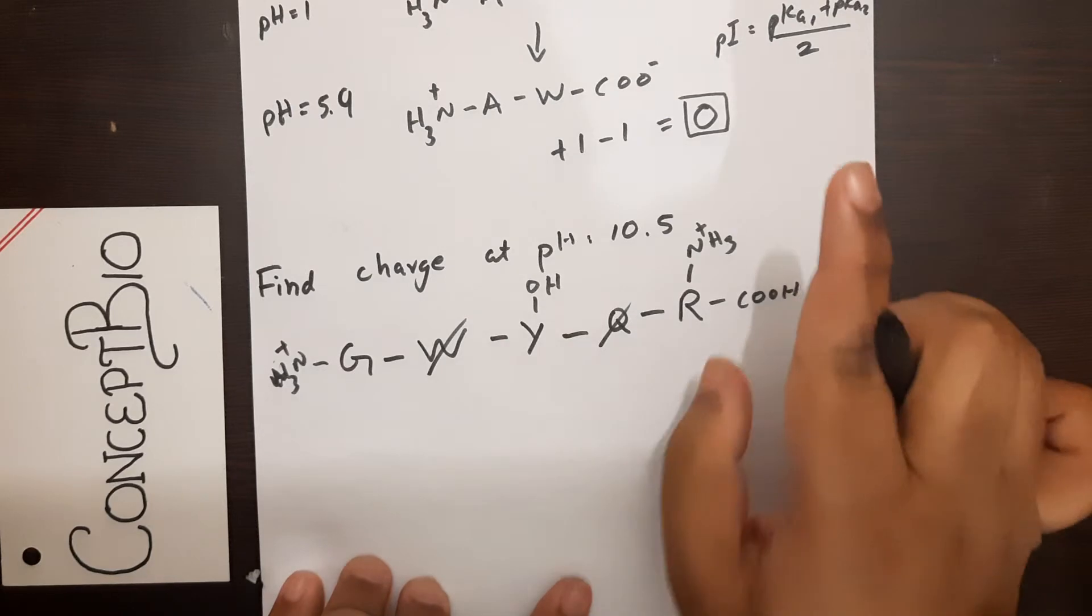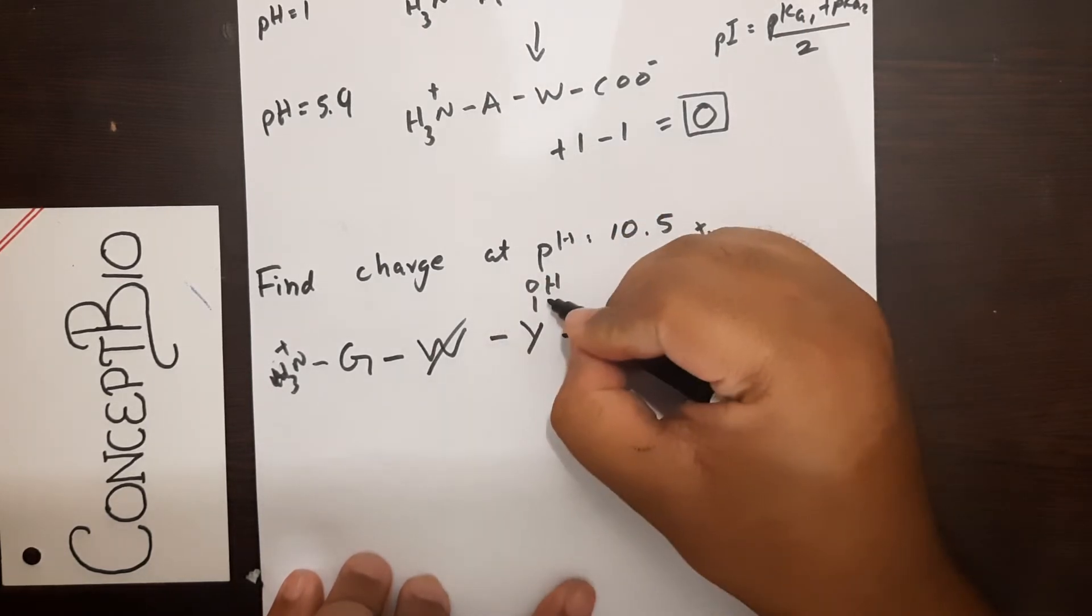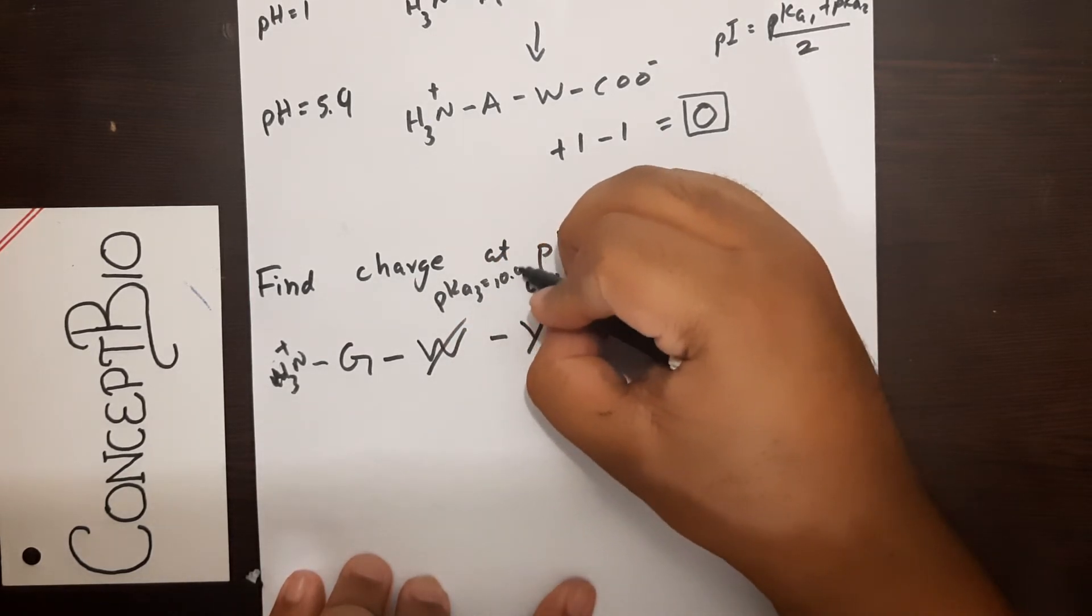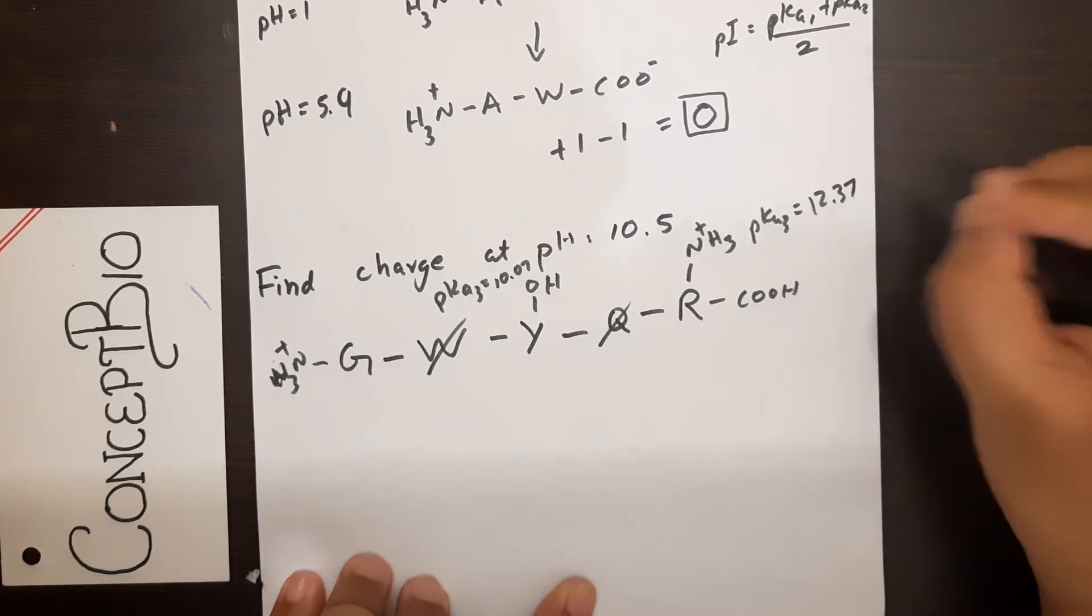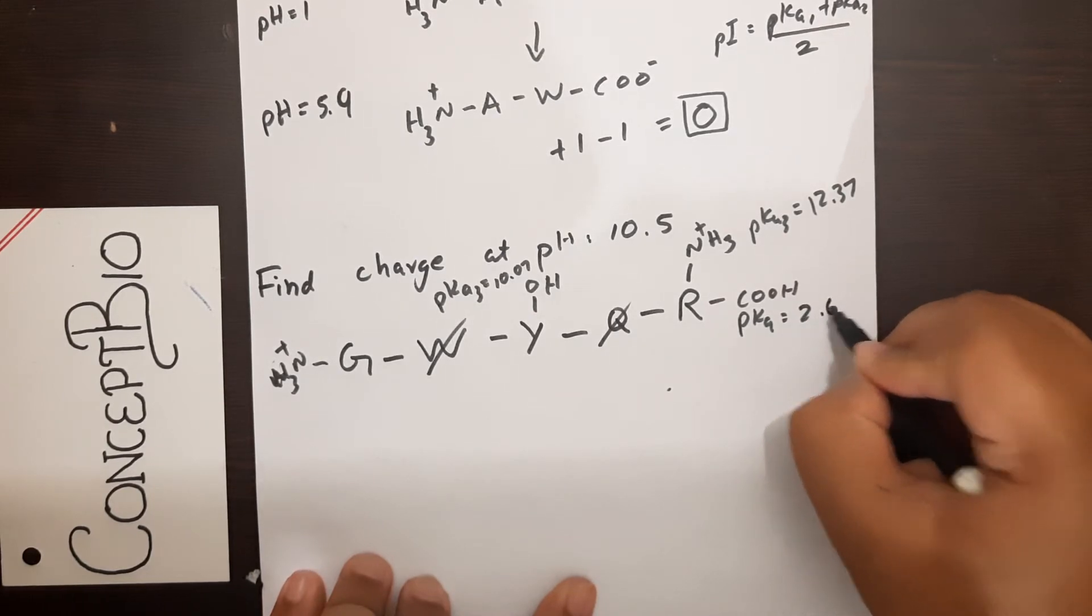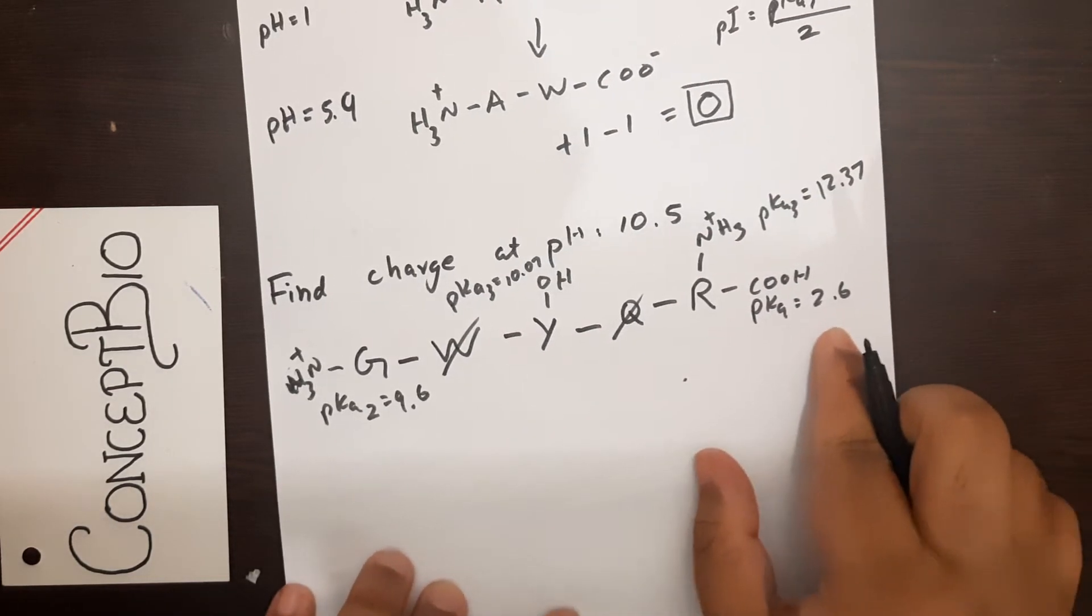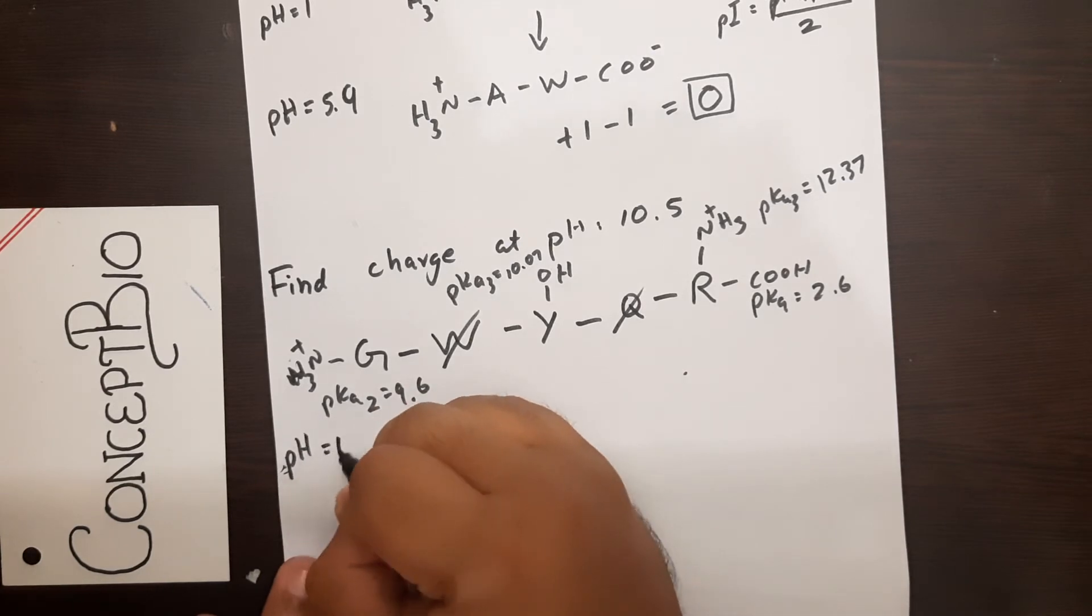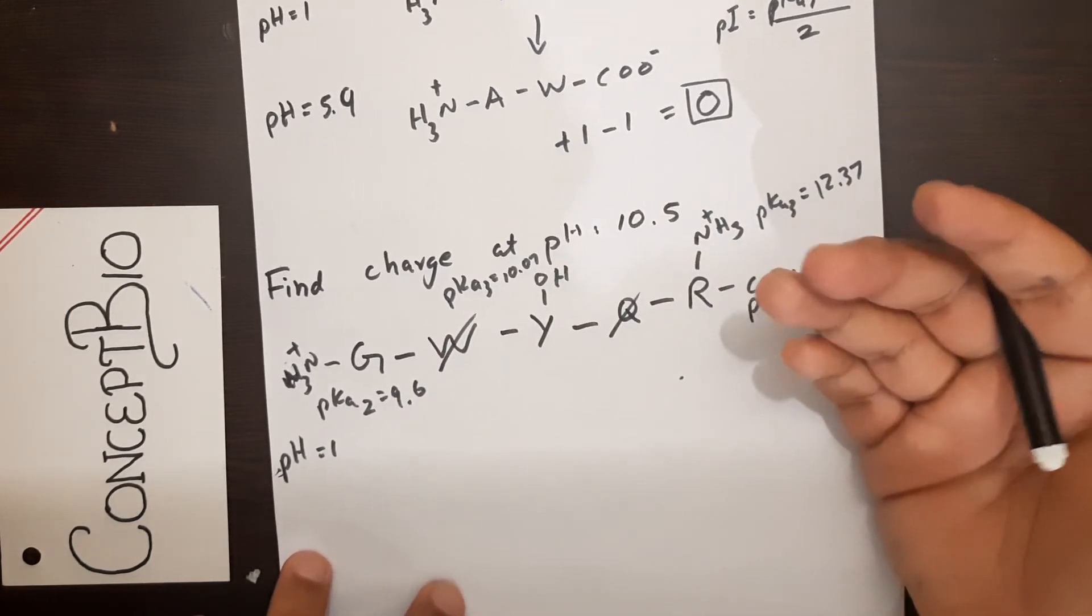Once it's an interview or paper question, usually they'll be giving you the pKa3 values for tyrosine and arginine. For tyrosine, the pKa3 is equal to 10.07, and for arginine, pKa3 equals 12.37. Again, for the alpha terminal, pKa1 equals 2.6 and pKa2 equals 9.6. Please remember this: 2.6 and 9.6. The other values will always be given. This is assuming pH equals 1, meaning it's so low it's lower than every other pKa value, therefore everything will be in its protonated stage.